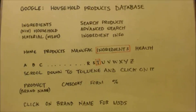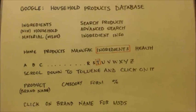Now you'll notice the next thing they show you — a list of products with their brand name, the category like arts and crafts or automotive, the form it comes in — is it liquid, is it aerosol — and the percentage of toluene in that product. It might say 30%, 20%, 0.1%, whatever.